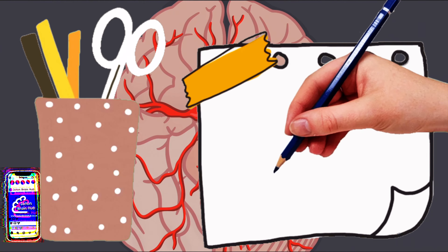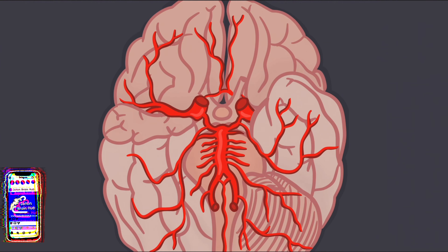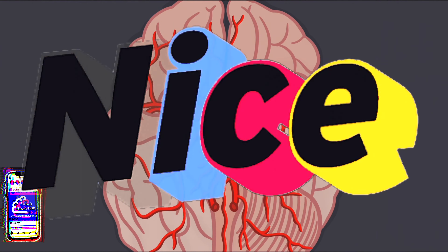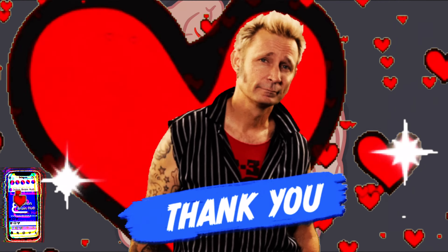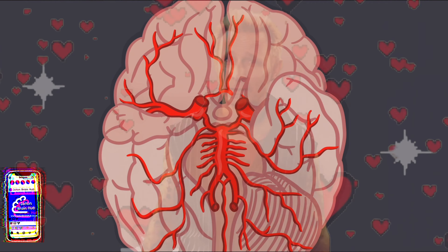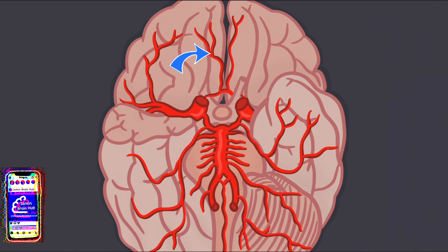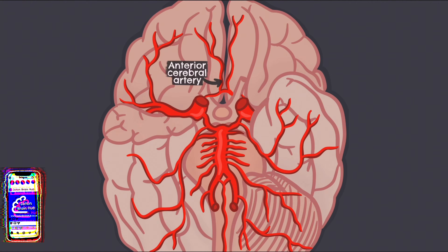I recommend pausing the video and drawing each artery as we come across them — that way at the end of the video you will have a complete labelled diagram. Let's start with the two most anterior arteries, the anterior cerebral arteries. These are seen running parallel at the top of the screen and can be found above the optic nerves.